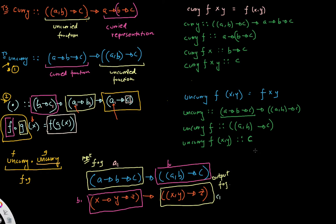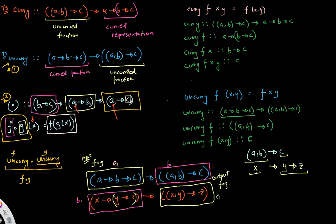To get the types matched up, I take the A-comma-B tuple from the first pink box and align it with X, Y, Z from the second. This means wherever we see X it can be replaced with the tuple (A, B), and wherever we see C it can be replaced with a function from Y to Z — they're just equivalent representations.